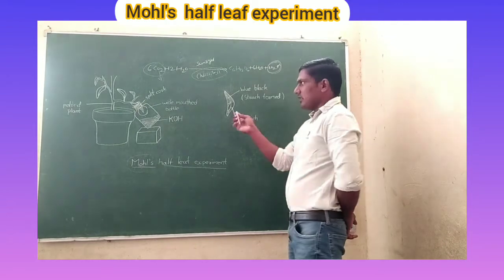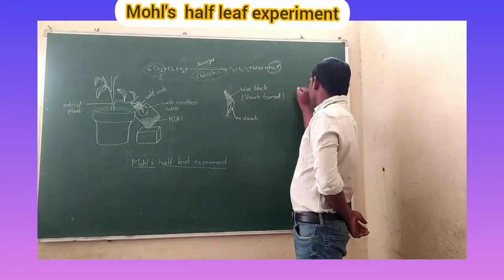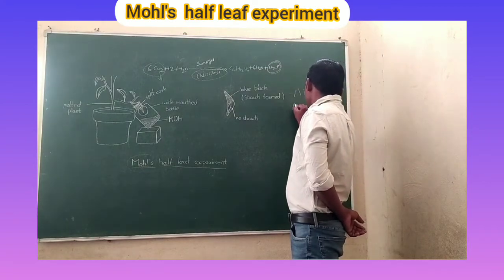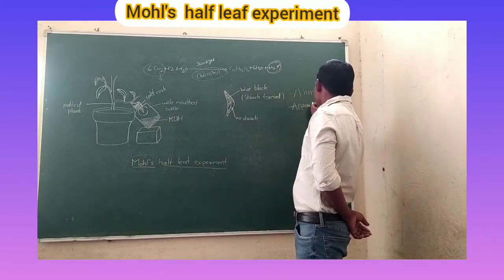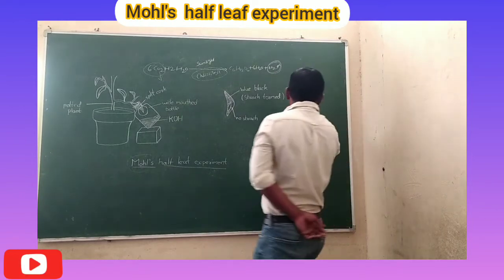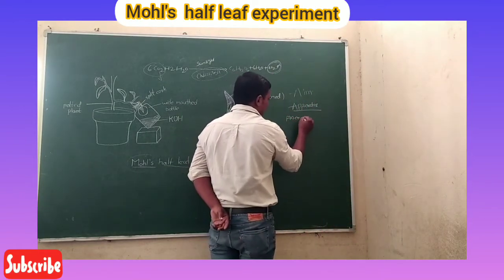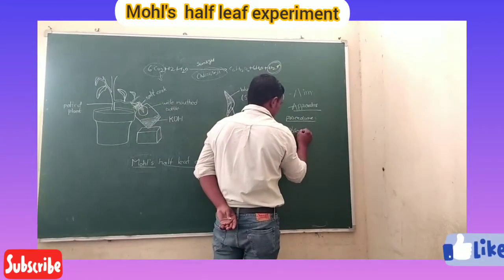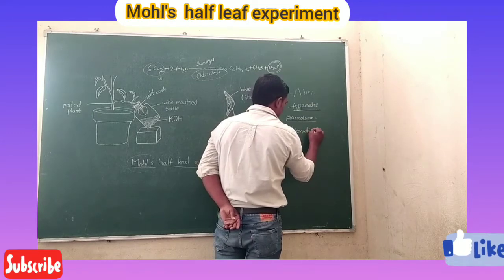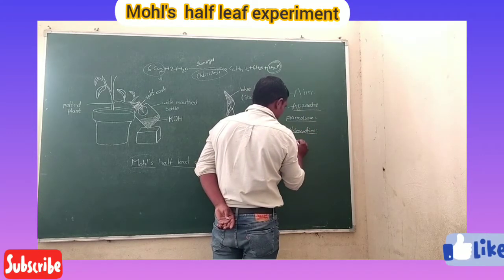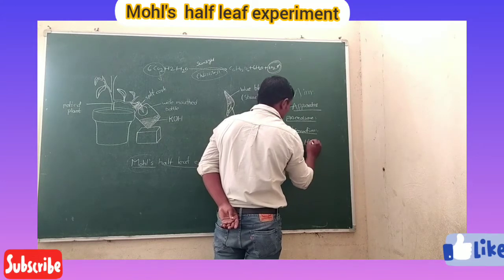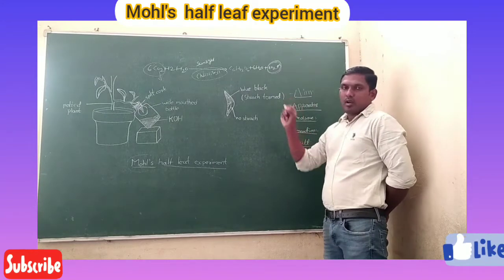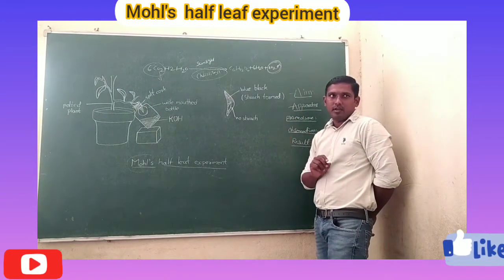First, we can outline the experiment structure. We write the aim, then materials — otherwise called apparatus — then procedure, observation, results, and also precautions. The aim is: we have to prove that carbon dioxide is necessary for photosynthesis.